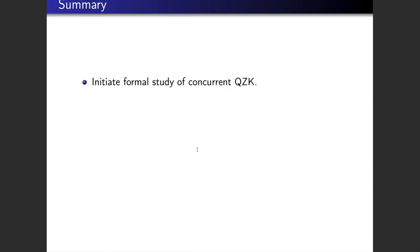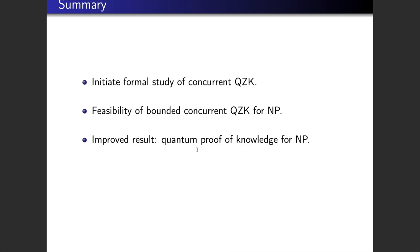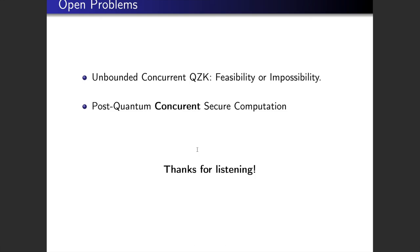To conclude: we initiate a formal study of concurrent QZK. We showed feasibility of bounded concurrent QZK for NP. Additional results include quantum proof of knowledge for NP and feasibility of bounded concurrent QZK for QMA. What remains open is to show the possibility or impossibility of unbounded concurrent QZK, and also post-quantum concurrently secure computation. Thank you.